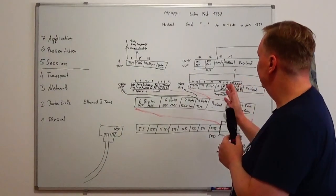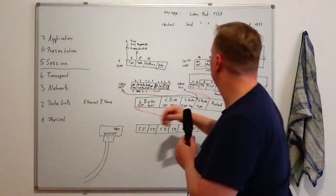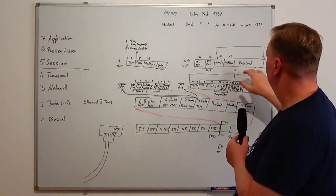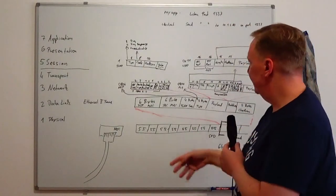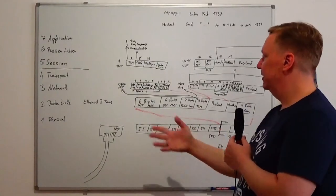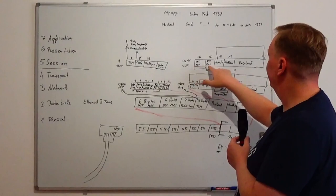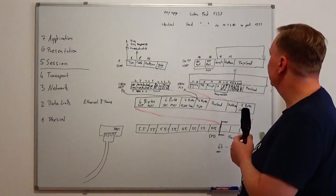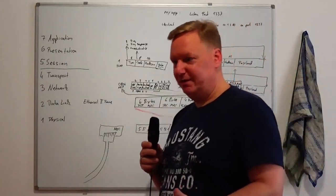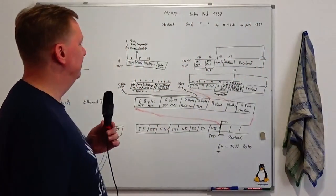TCP is somewhat similar to UDP — they are both transport protocols, both used by your programs to communicate through the network stack to other machines. They both have 16-bit ports, which are similar. But if there were no differences, there would be no reason to have TCP in the first place.